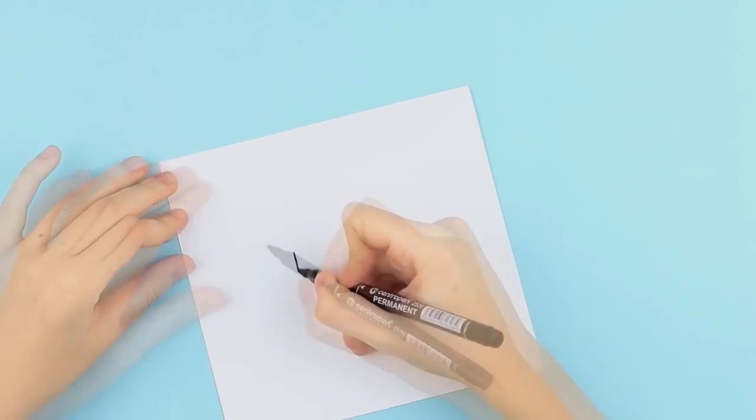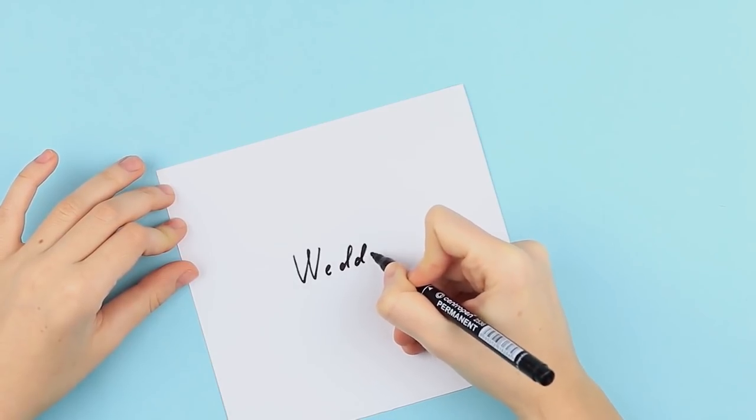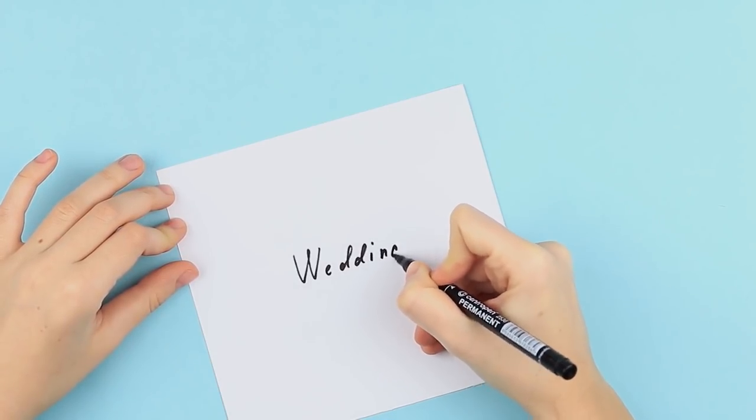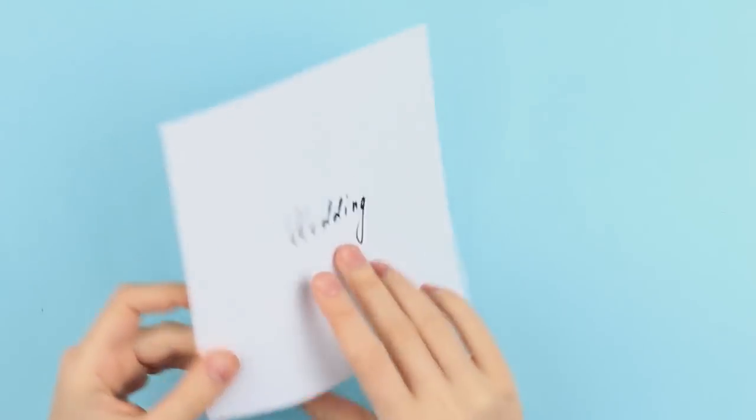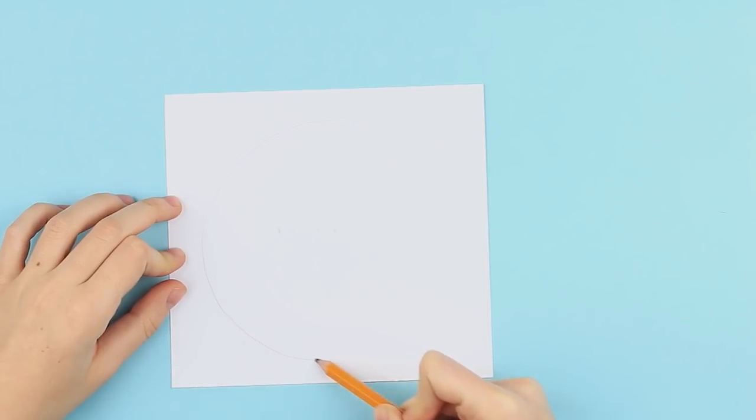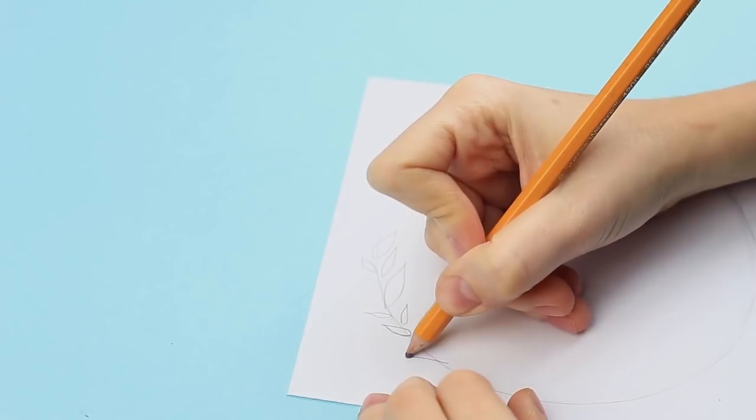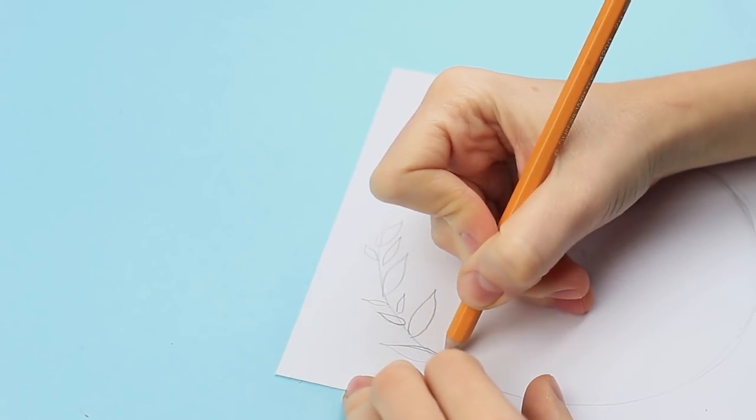Write down the word wedding in the center of a square paper sheet. You can print it out or cut it out from a magazine. Turn the paper over. Draw a big circle by hand. It's a leaf wreath base. Outline leaves of different sizes in one direction.